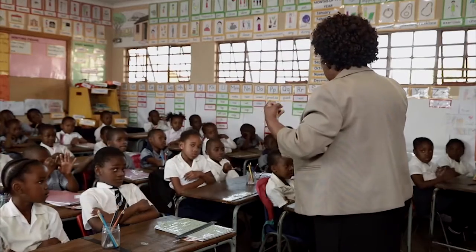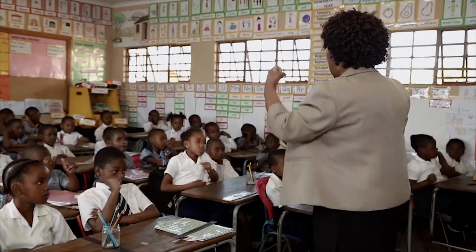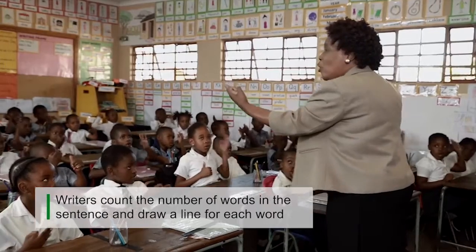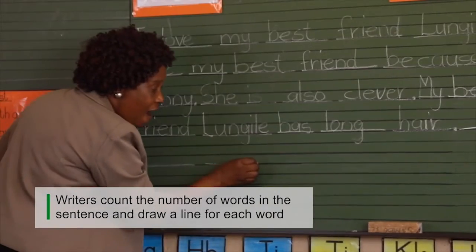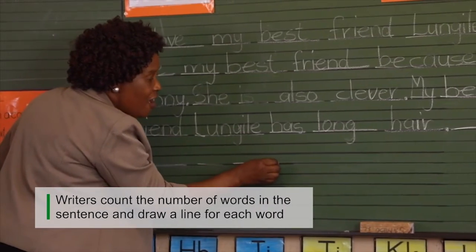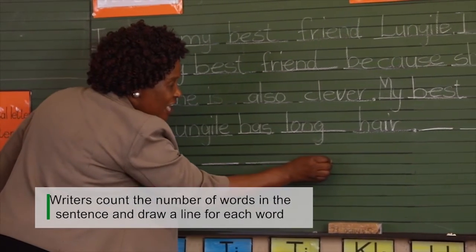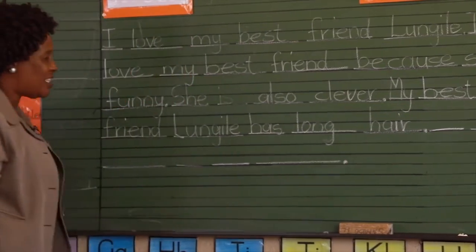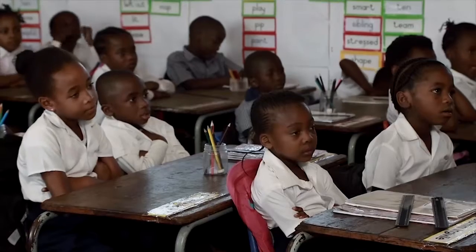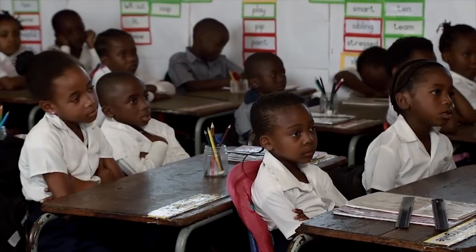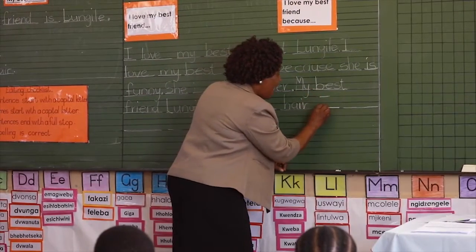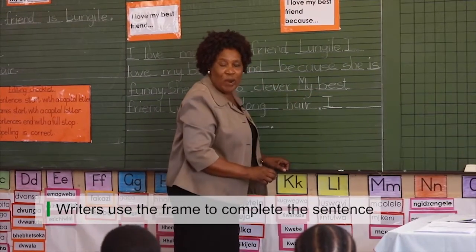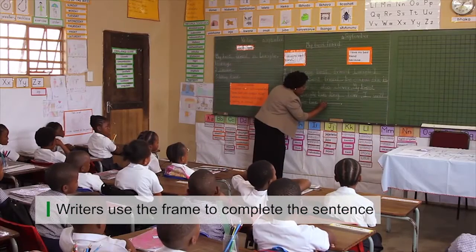Let us count the number of words that we are going to write. Writers count the number of words in the sentence and draw a line for each word. And I put a full stop at the end of a sentence. We know that at the beginning of a sentence we write a capital letter. Writers use the frame to complete the sentence.